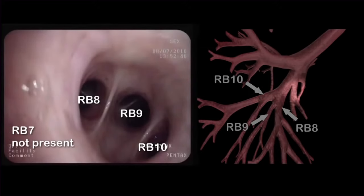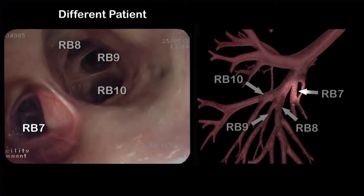In most cases, the medial basal branch, or RB7, can be found at the medial side of the lower lobe bronchus. In this patient, however, the RB7 is absent. This picture from a different patient shows an example of the medial basal branch, or RB7, of the lower lobe.